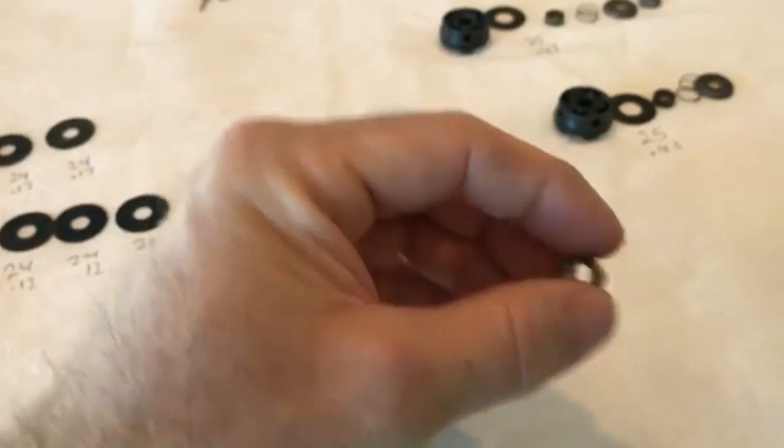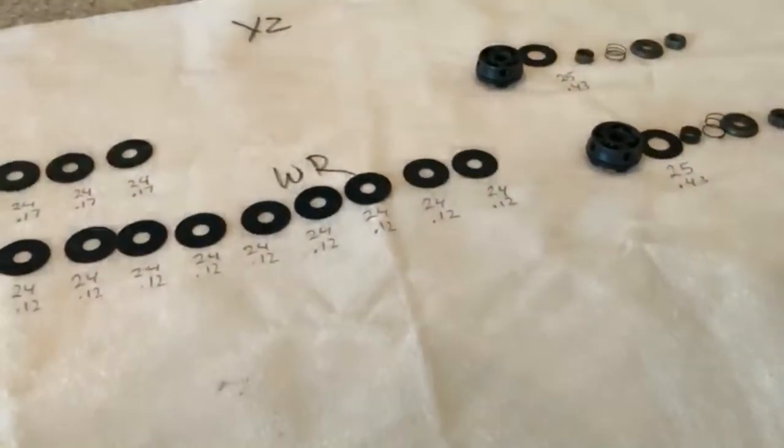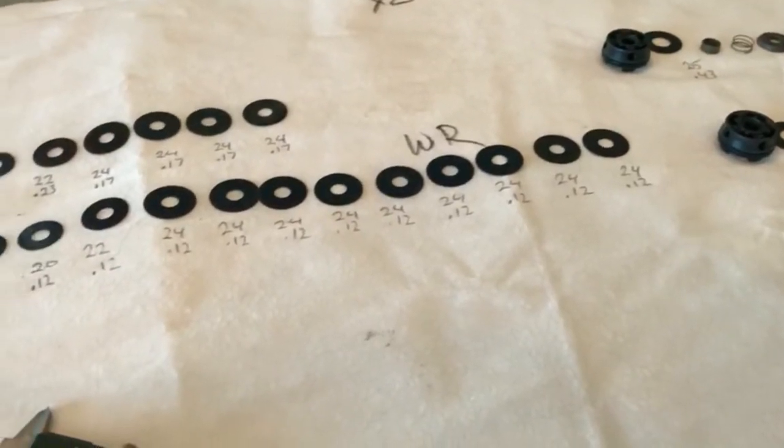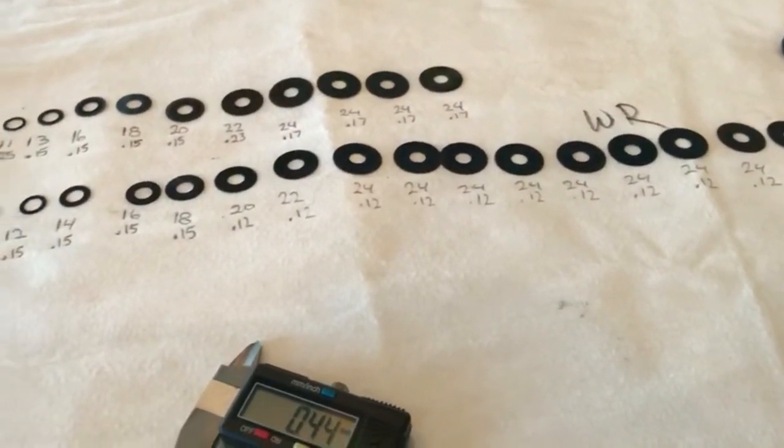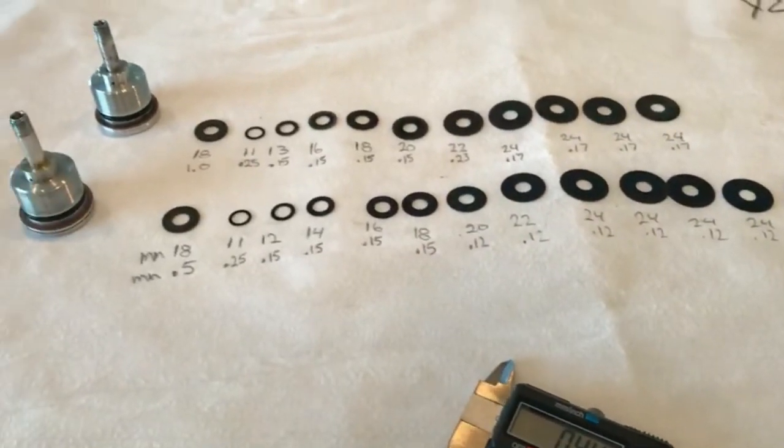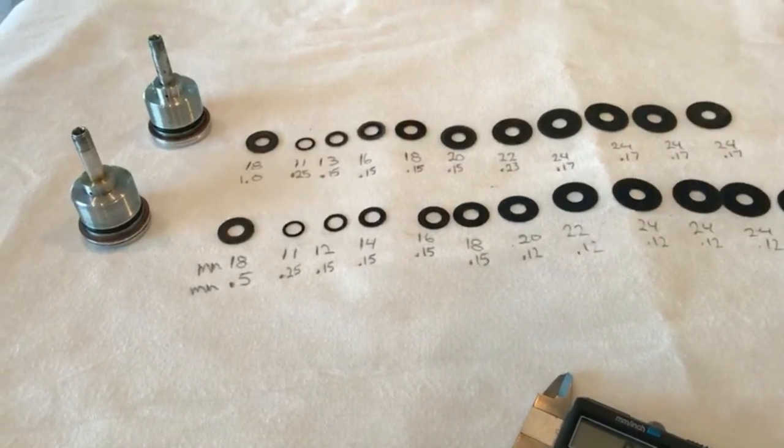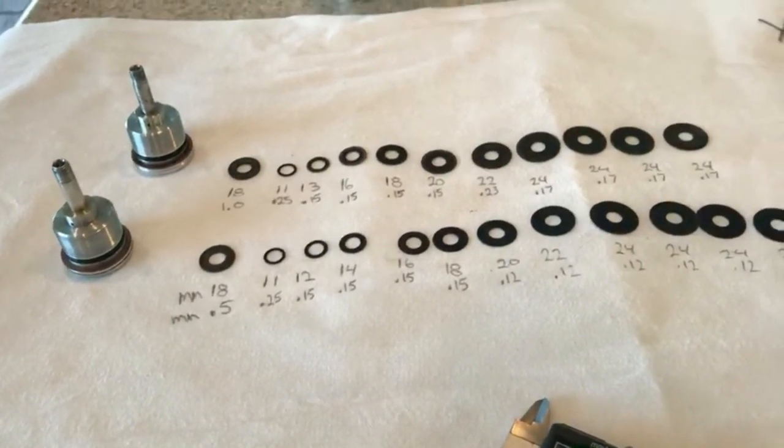It's pretty critical on the forks, but on the shock if you ever do your shock, that could be a matter of life and death. If that nut comes off on your shock it could really lead to a bad accident. So always red Loctite those and torque them to the proper spec. Happy tuning!